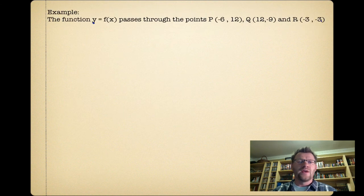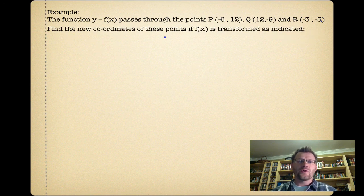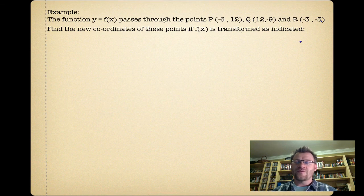Here's our second example. The function y = f(x) passes through the points P(−6, 12), Q(12, −9), and R(−3, −3). Find the new coordinates of these points if f(x) is transformed as indicated. It's always nice to organize our information, so we have our three original points.